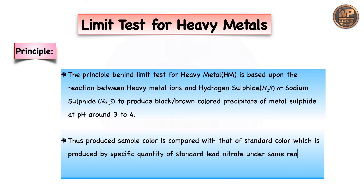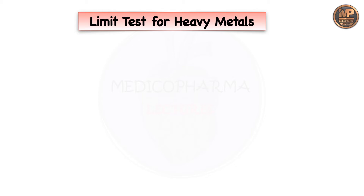For exam purposes, the principle can be written as: the principle behind the limit test for heavy metals is based upon the reaction between heavy metal ions and hydrogen sulfide or sodium sulfide to produce a black-brown color precipitate of metal sulfide at pH around 3 to 4. The sample color thus produced is compared with the standard color produced by a specific amount of lead nitrate solution under the same reaction conditions.